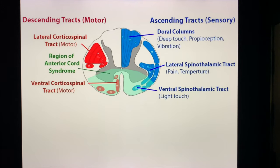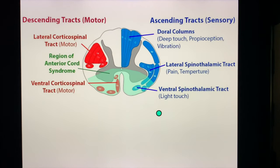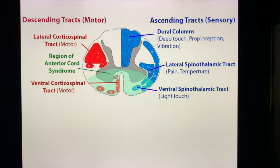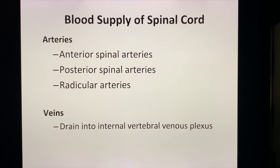The lateral spinothalamic tract is responsible for pain and temperature, while the ventral spinothalamic tract is for light touch. The dorsal columns are for proprioception and vibration.